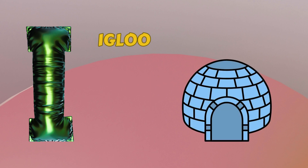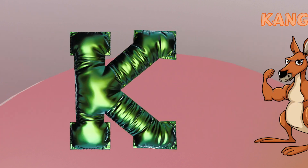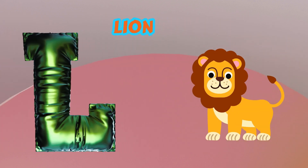I is for Igloo. I-I-Igloo. J is for Jump. J-J-Jump. K is for Kangaroo. K-K-Kangaroo. L is for Lion. L-L-Lion.